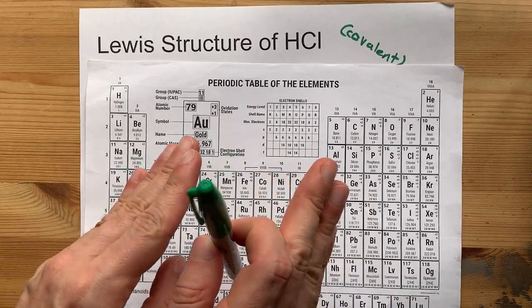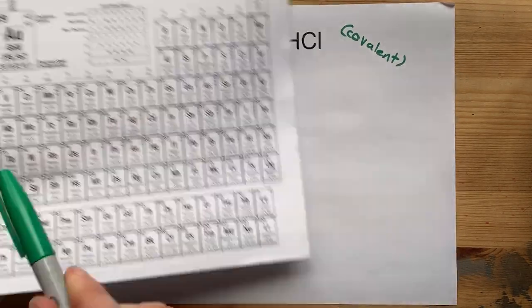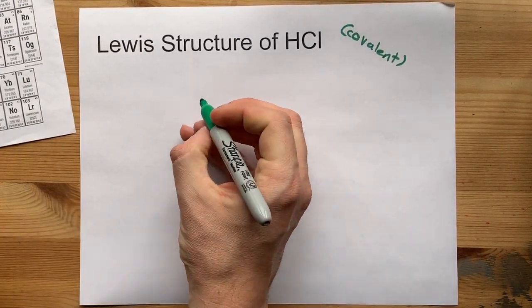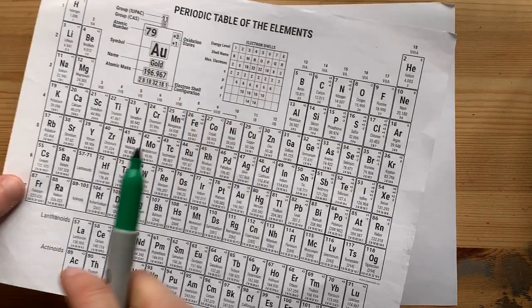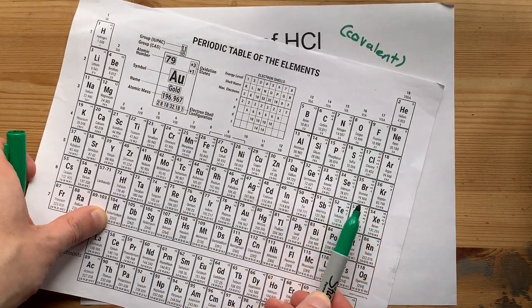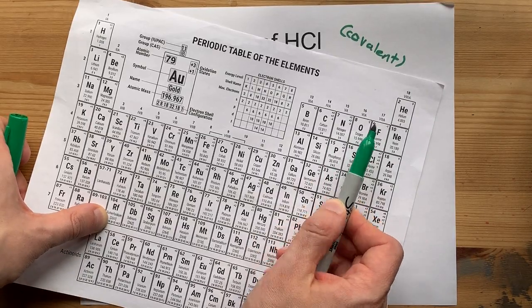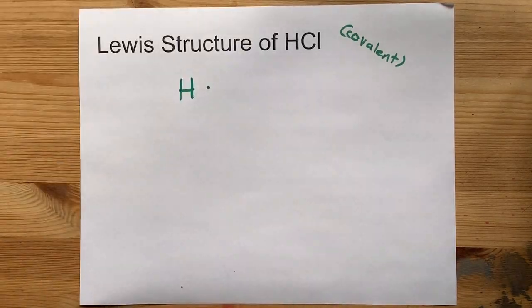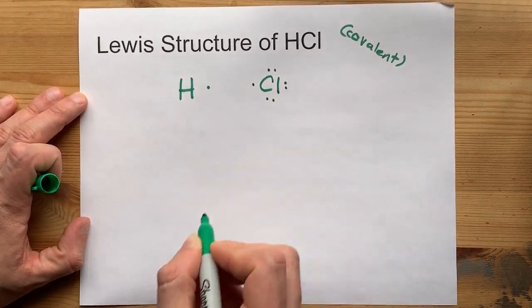Let's draw the Lewis dot diagrams for each atom separately. Hydrogen is in column one, so it brings one valence electron with it. There's the one dot. Chlorine is in group 17. All of these atoms bring seven valence electrons. Get it? 17, seven valence electrons. Cl, 1, 2, 3, 4, 5, 6, 7. There we go.